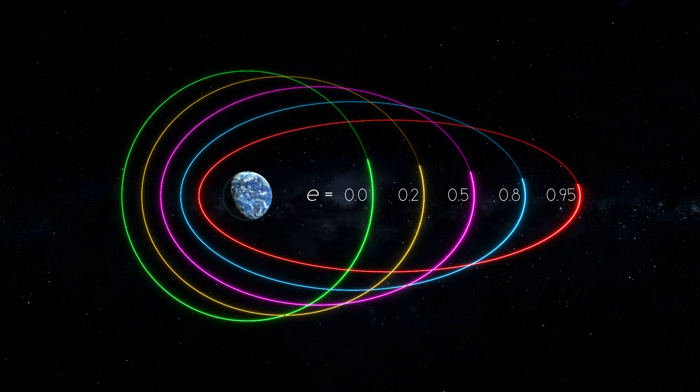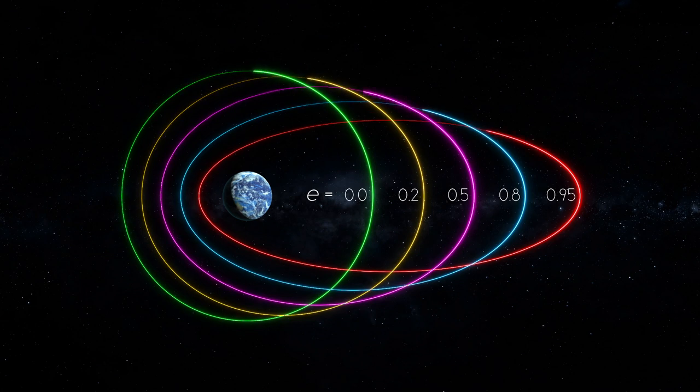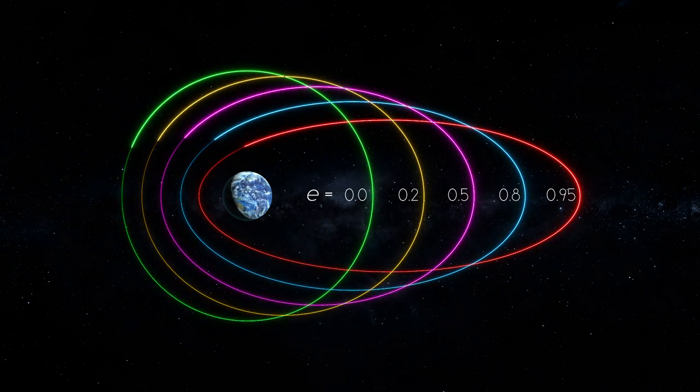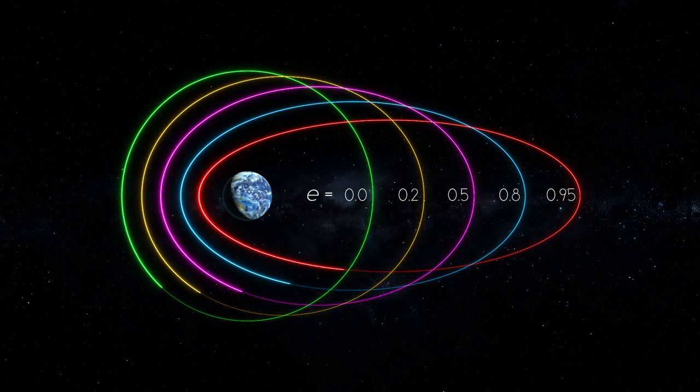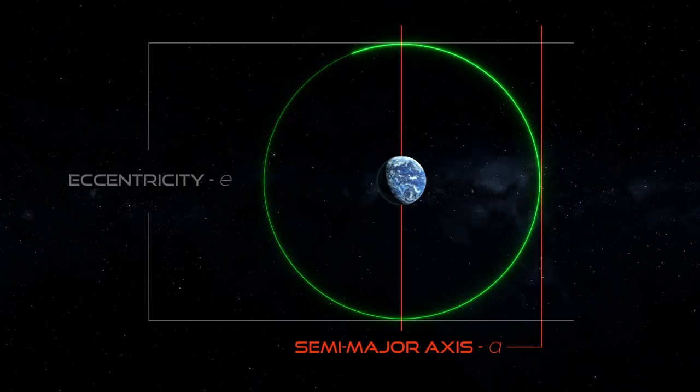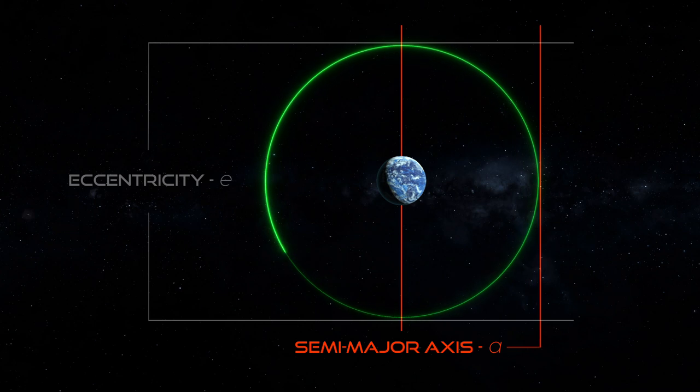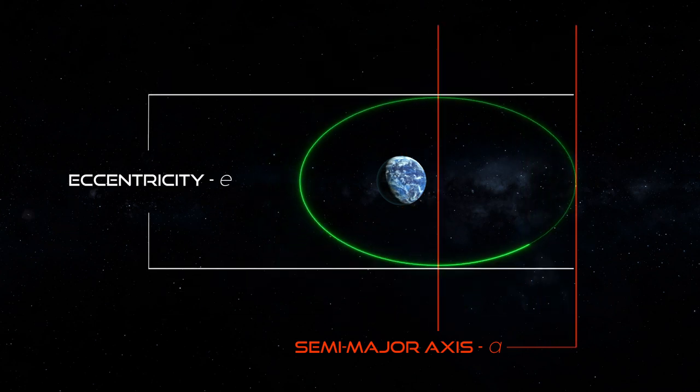ranging from zero to just under one. Eccentricity can be one or higher, but the orbit would no longer be orbiting the Earth. It is important to state that eccentricity only tells how round or flat the orbit is. You can have orbits with different semi-major axis but the same eccentricity, and you can have satellite orbits with the same semi-major axis but different eccentricity. The semi-major axis tells us the size of the orbit, and eccentricity tells us the shape of the orbit.